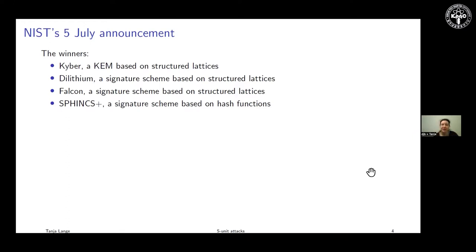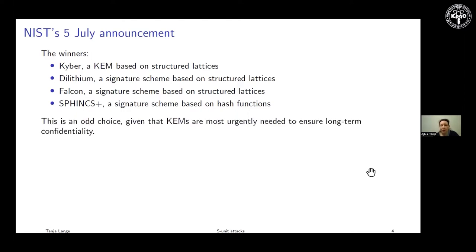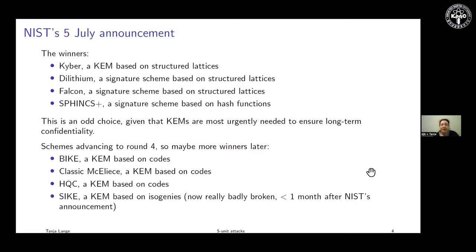The most urgent task we have is to encrypt our data today — making sure that an attacker who has a quantum computer tomorrow, who is recording our conversations today, will not be able to read them. So the most urgent thing to roll out is post-quantum encryption or KEMs everywhere. NIST only included one KEM and three signature schemes. Everything that was taken is a kind of safe bet, and if people want a safe bet, why not give it to them? But McEliece is one of the runner-ups.